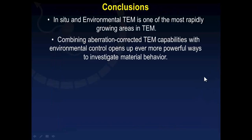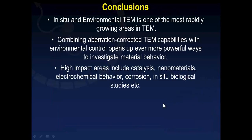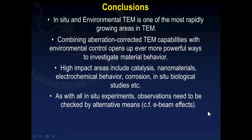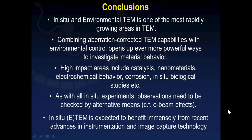In conclusion, in situ and environmental TEM is one of the most rapidly growing areas in TEM. Combining aberration-corrected TEM capabilities with environmental control opens up ever more powerful ways to investigate material behavior. High-impact areas include catalysis, nanomaterials, electrochemical behavior, corrosion, and studying biological specimens in their native environment. As with all in situ experiments, observations need to be checked with alternative means, particularly the influence of the electron beam for gas and liquid-related experiments. In situ environmental TEM is expected to benefit immensely from recent advances in instrumentation and image capture technology.